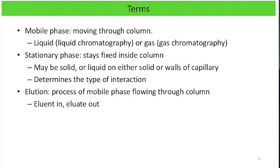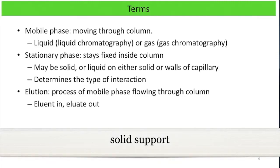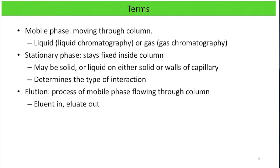The stationary phase stays fixed inside the column and doesn't move at all. It can be a solid, or a liquid on either a solid or the walls of a capillary — like a liquid layer that's bound or stuck to a solid stationary phase. The stationary phase determines the type of interaction used to separate compounds. For example, it could be based on polarity: if the stationary phase is polar and the mobile phase is non-polar, then polar analytes will preferentially stick to the polar stationary phase and take a long time to flow through the column.